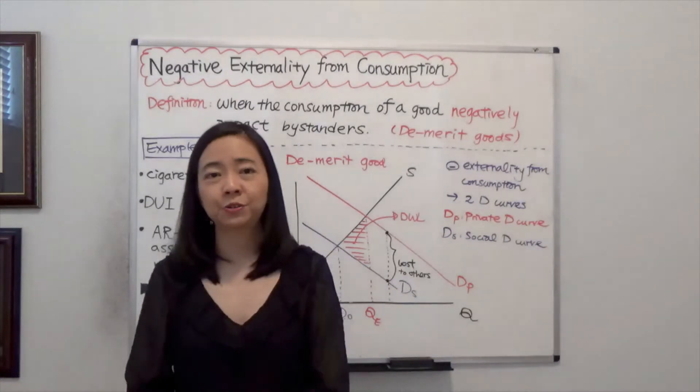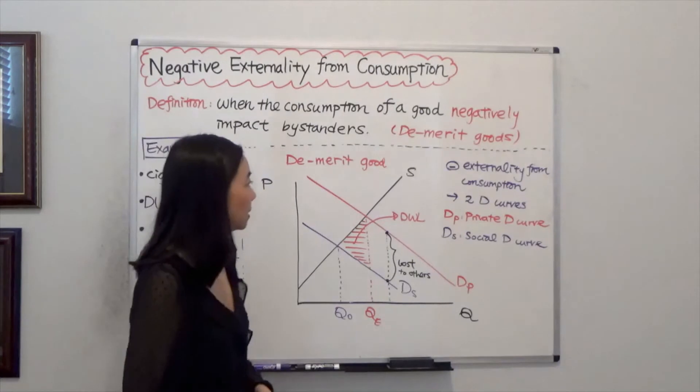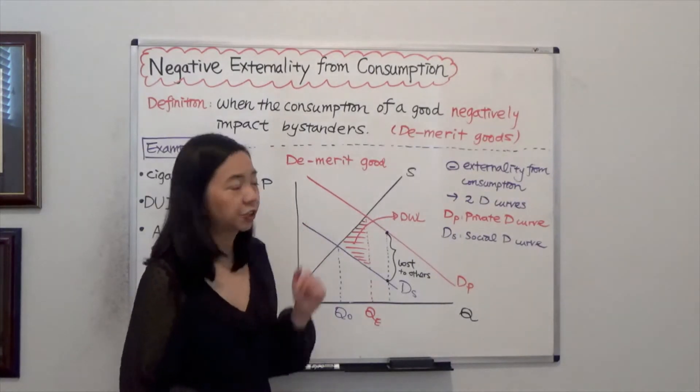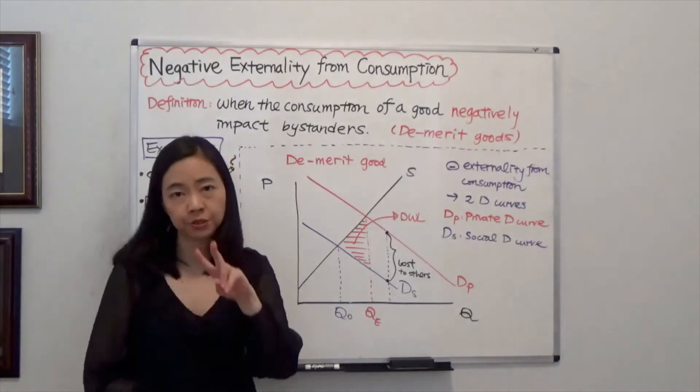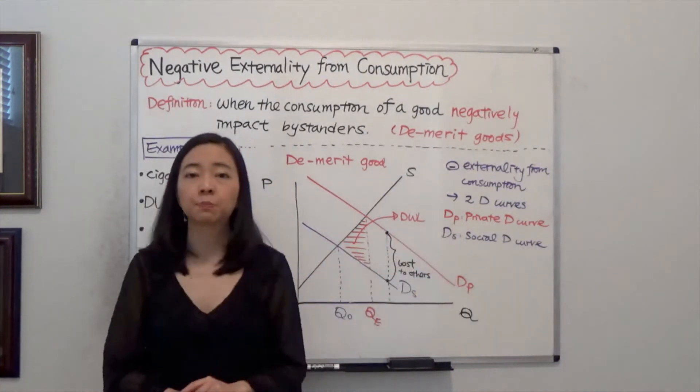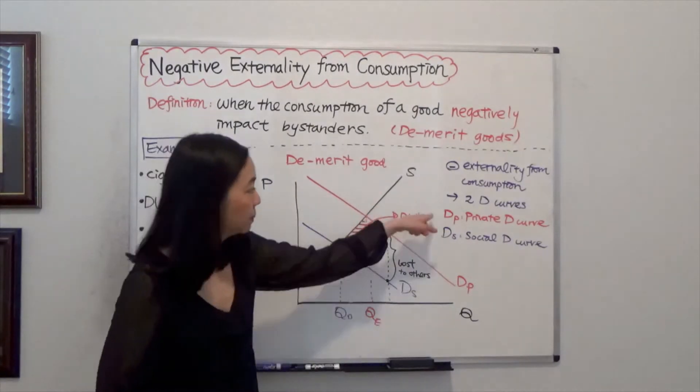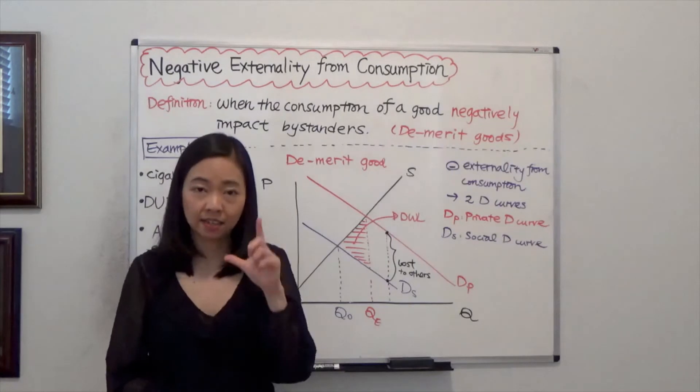Now we're ready to sketch a demand and supply diagram for this demerit good. Notice that our externality comes from consumption. Therefore, we will have two demand curves. The first demand curve we call DP, the private demand curve. DP reflects the value of the good to the consumer and the consumer only.